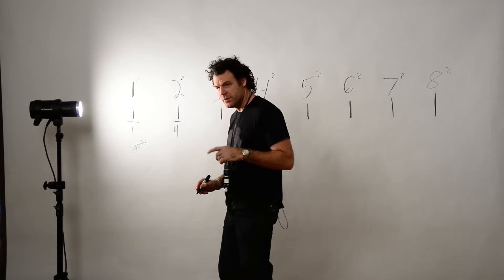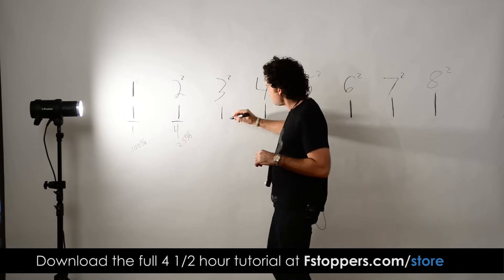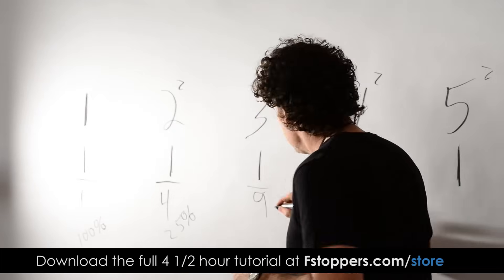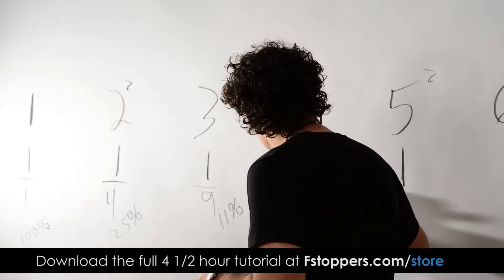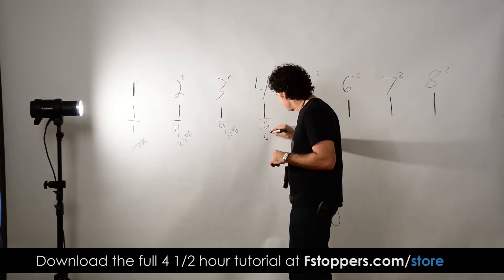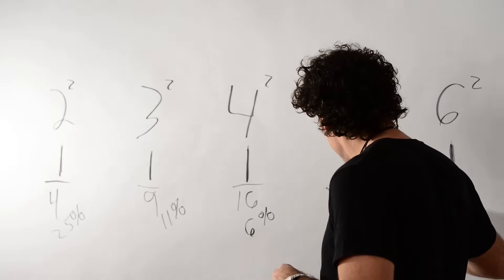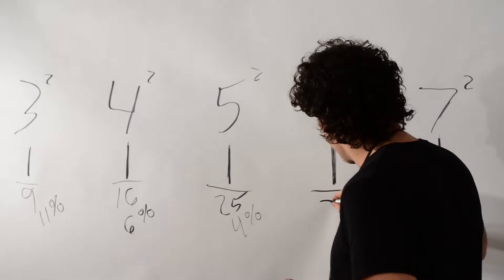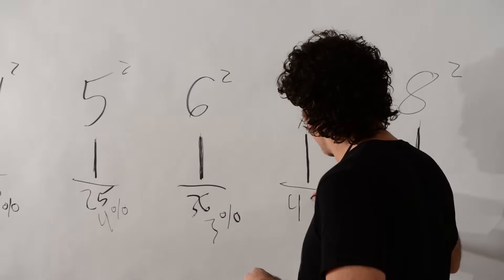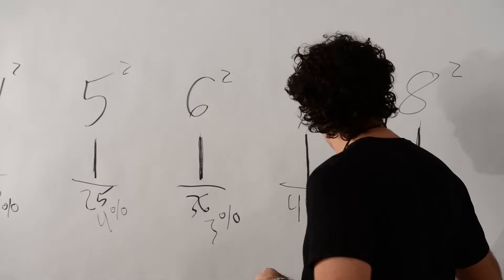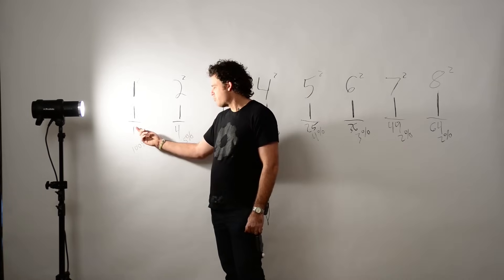One squared: one over one equals one — that's 100% light. Two squared: one over four — 25% light. Three squared: one over nine — about 11% light. Four squared: one over sixteen — 6% light. Five squared: one over twenty-five — 4% light. Six squared: one over thirty-six — 3% light. Seven squared: one over forty-nine — 2% light.